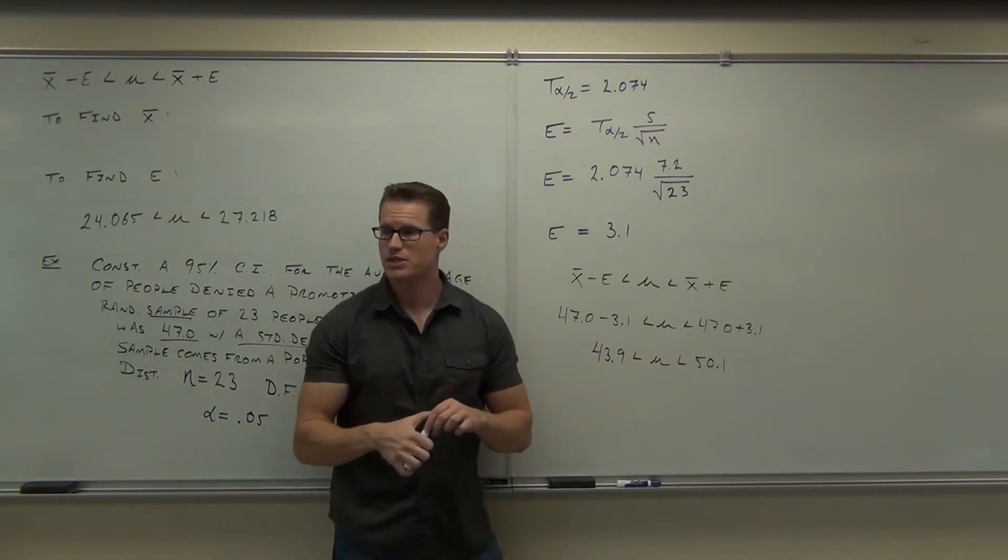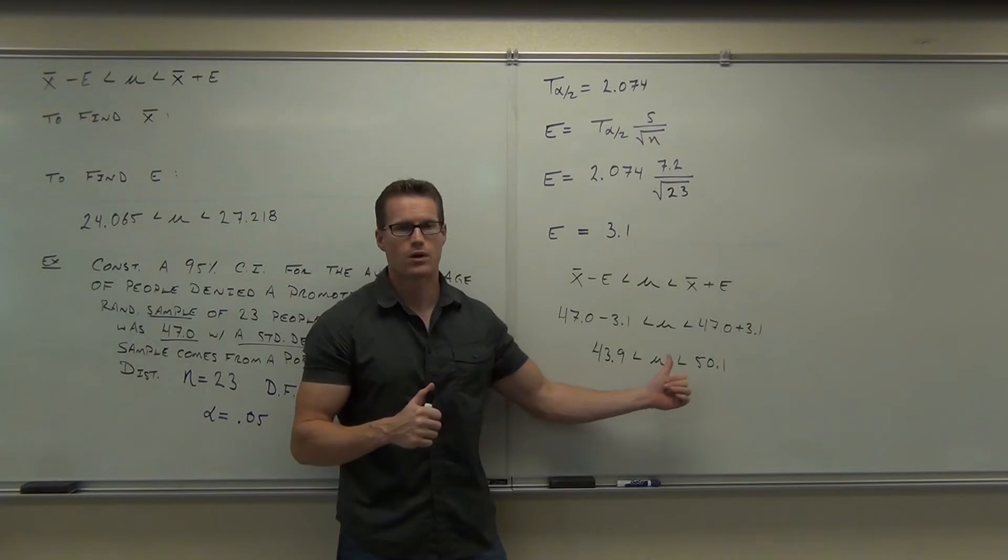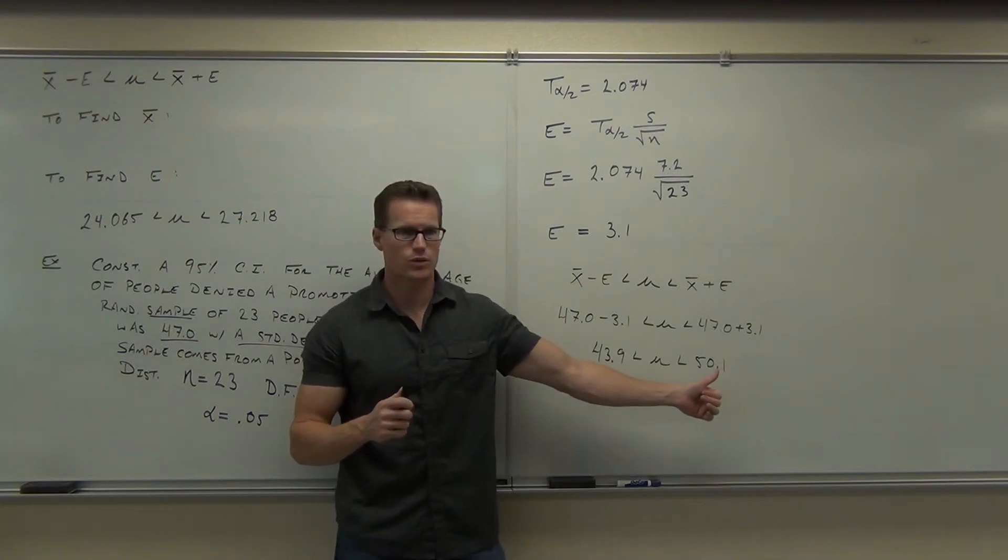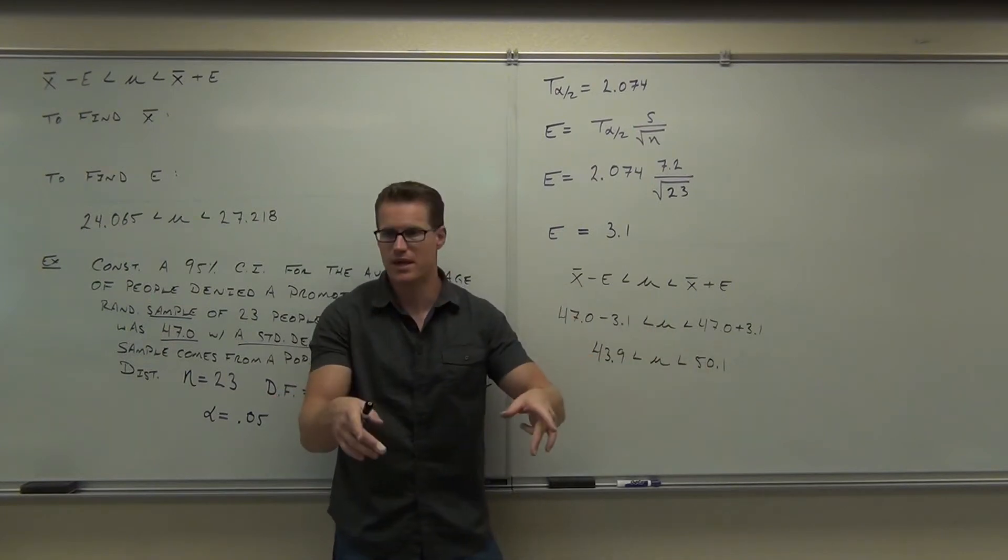95% sure that it's going to fall between these ages. So here's what this means for this company. You're 95% sure that the people who are being denied a promotion are between 43 and 50, 44 and 50. Is that older than normal? I don't know. That's for someone else to decide. But you can provide them that information.